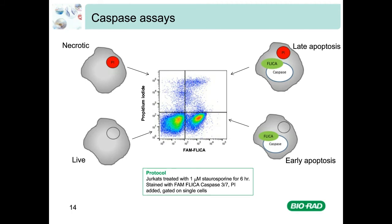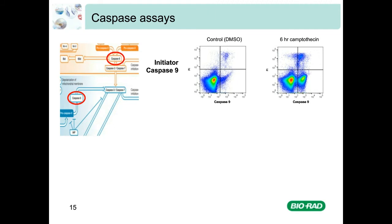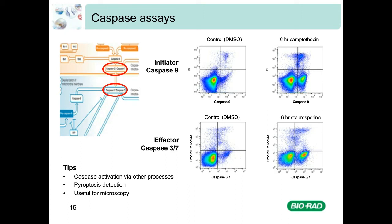We have FLICA kits that can measure different types of caspases and polycaspases. To show example data of an initiator and effector caspase, Jurkat cells were treated with staurosporine or camptothecin — a topoisomerase inhibitor that binds to the TOPO1-DNA complex, preventing DNA re-ligation and causing DNA damage and apoptosis. In the first example, we looked at activation of initiator caspase 9; in the second, effector caspase 3/7. In both cases, you can see an increase in caspase activation with more cells in the right-hand quadrants after treatment.